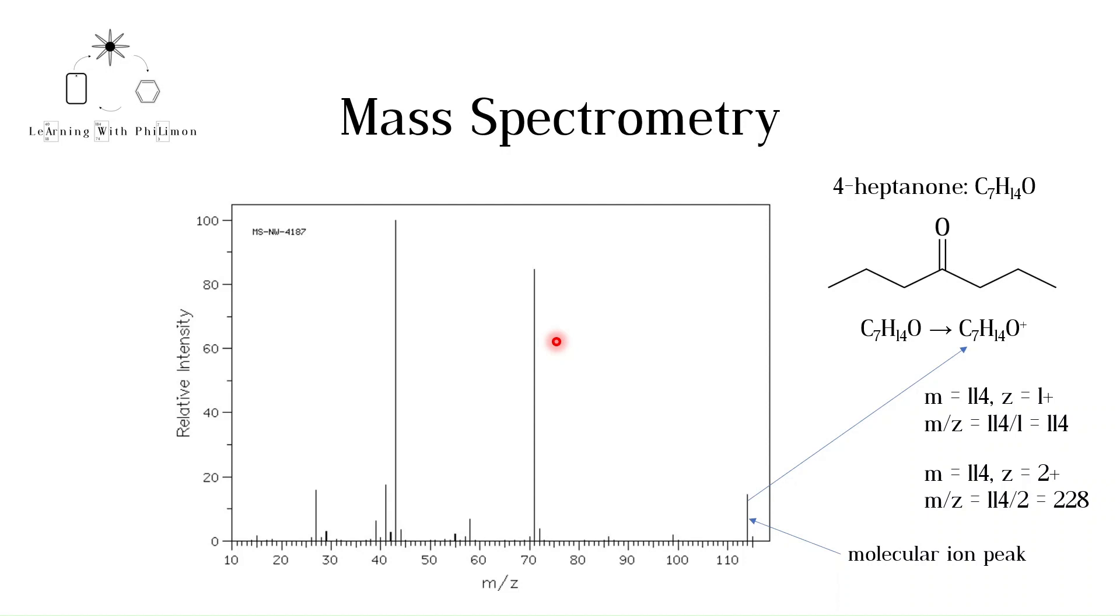For example, the most abundant peak for 4-heptanone is at 43. This corresponds to this alkyl chain, breaking off the molecular ion. The peak we see at 43 is due to the ion C3H7+. Here we see the skeletal formula of this ion.